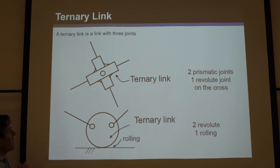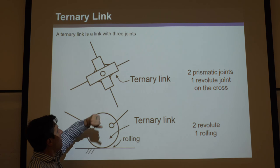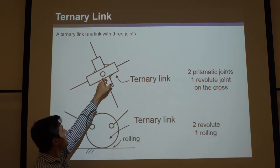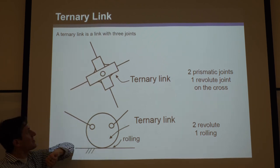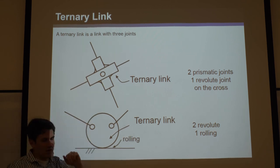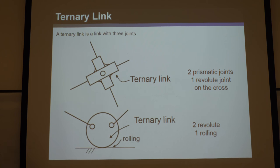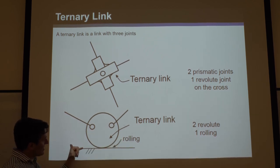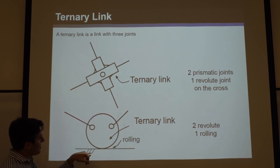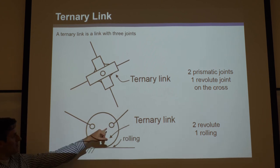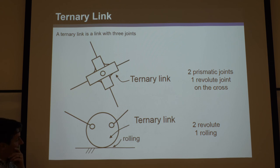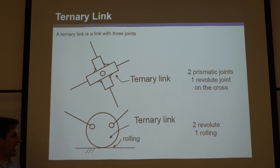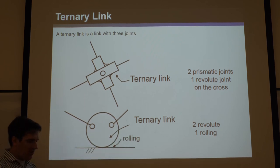Another ternary link example looks bizarre: a large cross-shaped assembly of boxes and half-circles is all one link. It slides on a link going all the way through it — that's two prism joints — and also has a revolute joint. Since it has three joints total, it's a ternary link.